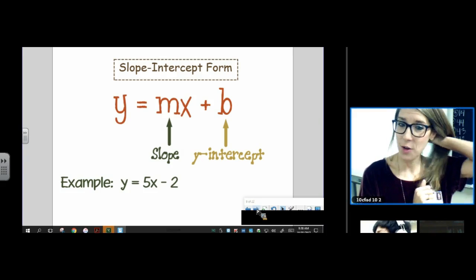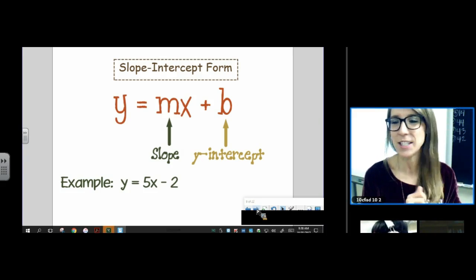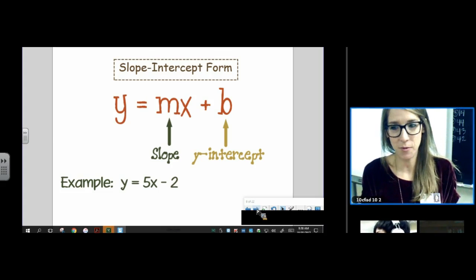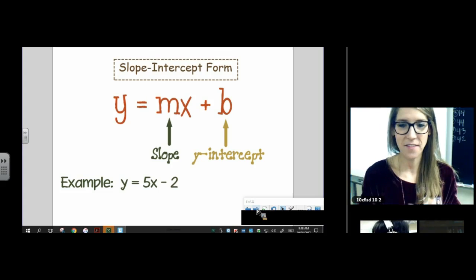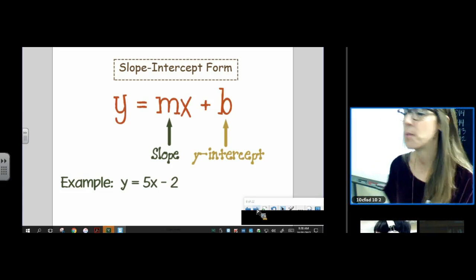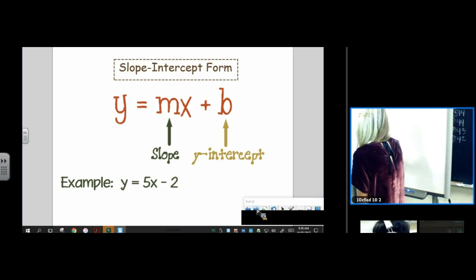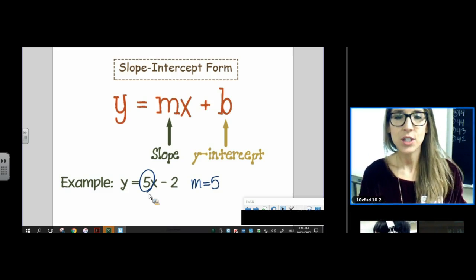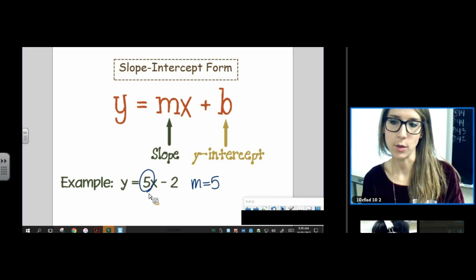We already talked about that last week when we dealt with slope. So just quickly write it down. That way you have all three forms together. When you're in slope intercept form, some people pretend they've never seen it before, but when it's in slope intercept form, the beautiful thing is the slope is right there. It's the coefficient of the x, so you don't have to do any work to find the slope.